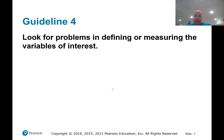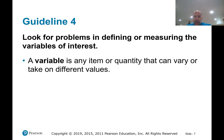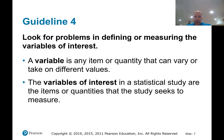Guideline number four: look for problems in defining or measuring the variable of interest. A variable is an item or quantity that changes from subject to subject. The variables of interest in a statistical study are the items or quantities that the study seeks to measure — those are the ones they're wanting to get information about.